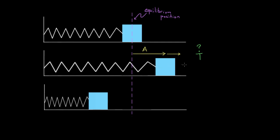But some of you might also say: if we pull this mass farther, Hooke's Law says that the force is proportional to the amount the spring is stretched. So if I pull this mass back farther, there's going to be a larger force. That's going to cause the mass to have a larger speed when it gets to the equilibrium position — so it's going to be moving faster. Since it moves faster, maybe it takes less time to go through a cycle.